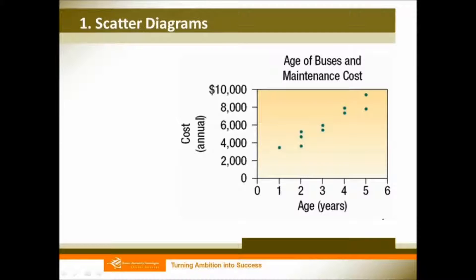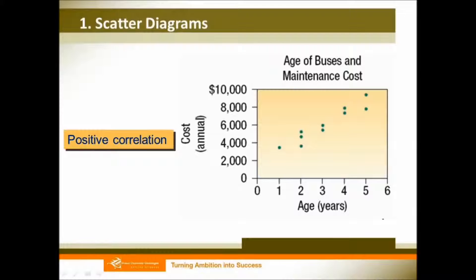From this graph, you may see that the older the buses, the more maintenance cost you have to spend. So we can formulate it as: the more of your x variable, the more of your y variable. So in this case, we say there is a positive correlation between age of buses and maintenance cost.